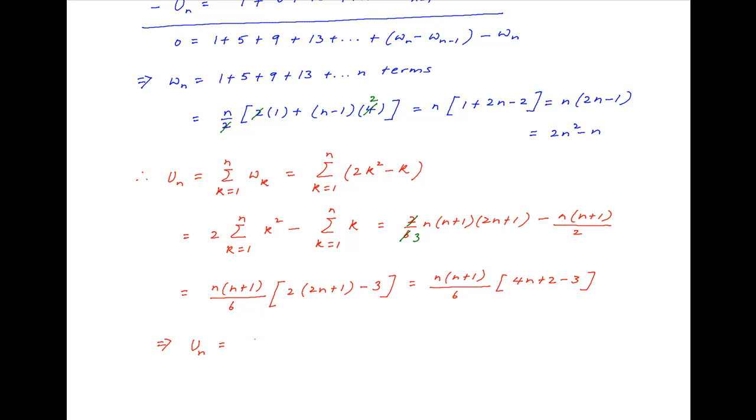And therefore, un is equal to n times n plus 1 times 4n minus 1 upon 6. And this is the required answer.